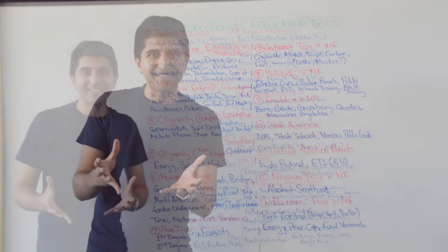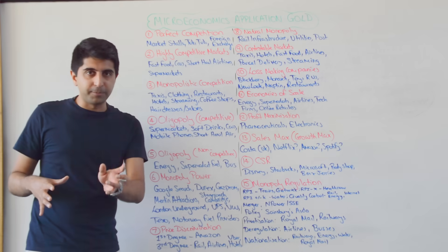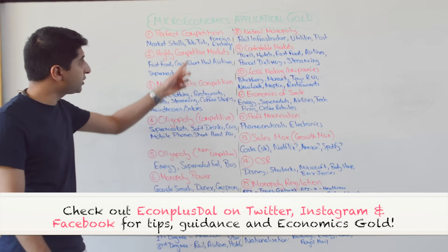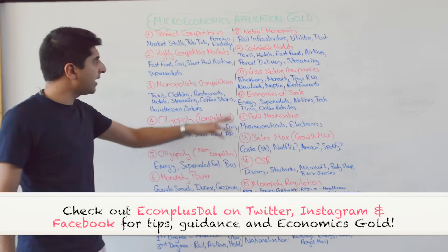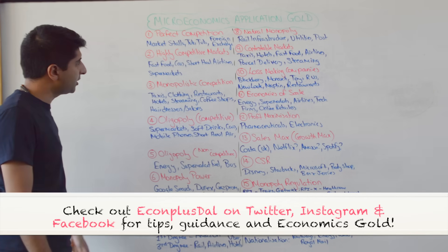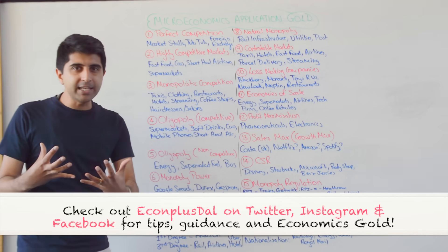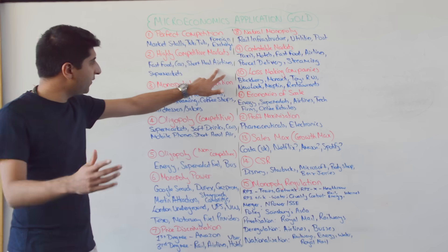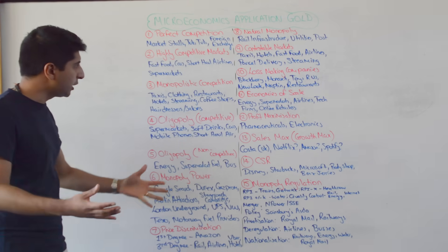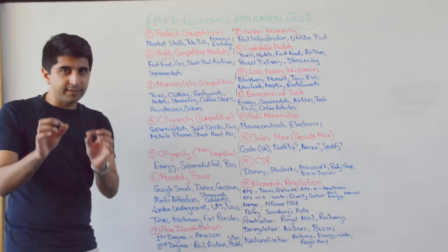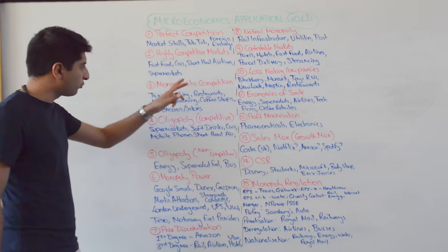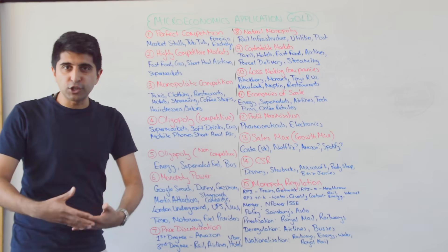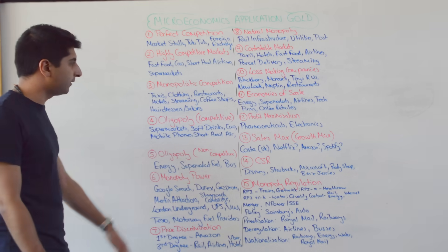Let's now look at market structures. There are no real-life examples of perfect competition, but markets that come very close: market stalls like fruit and veg stalls, tuk-tuks in India and Thailand, and foreign exchange. Very highly competitive markets generally: fast food especially in the US, cars in the EU, short-haul airlines in the UK, and supermarkets in the UK. Monopolistic competition: taxis, clothing, restaurants, hotels, streaming — music streaming, online streaming for TV shows and films, coffee shops, hairdressers and salons.